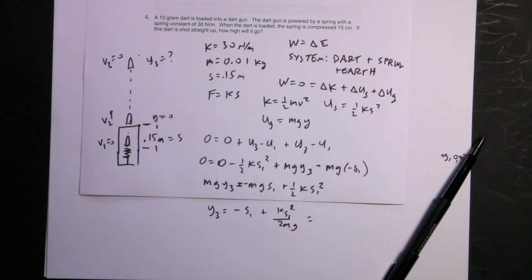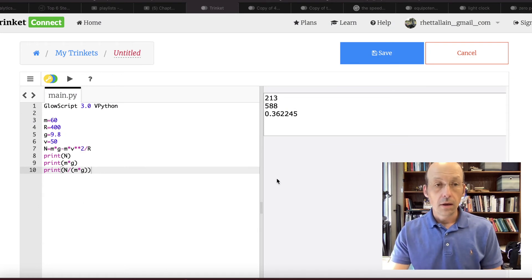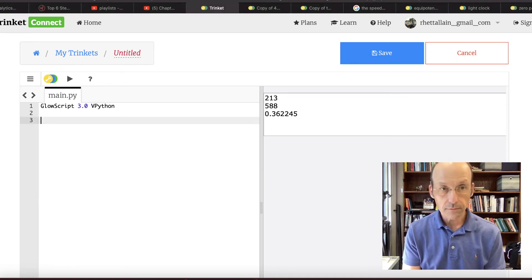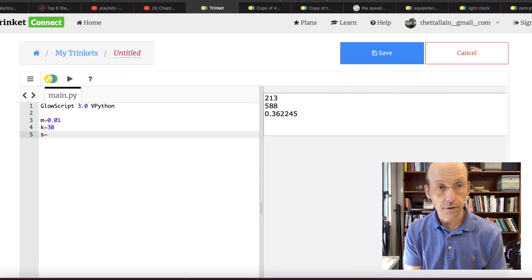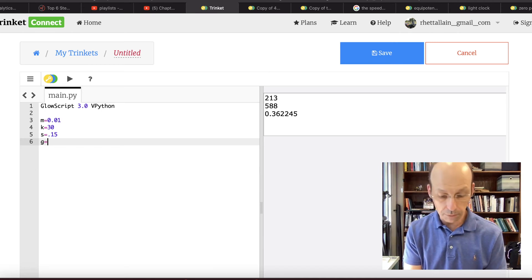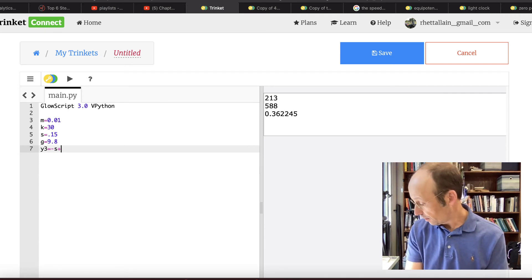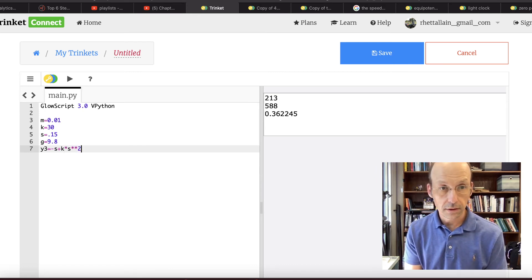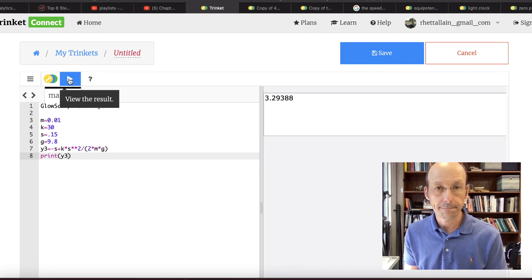Let's put that in in Python. I'm going to put in m equals 0.01, k equals 30, s equals 0.15, g equals 9.8. So y3 equals negative s plus k times s squared, divided by 2 times m times g. Print y3. So 3.29 meters.